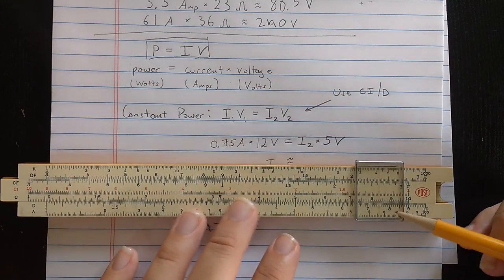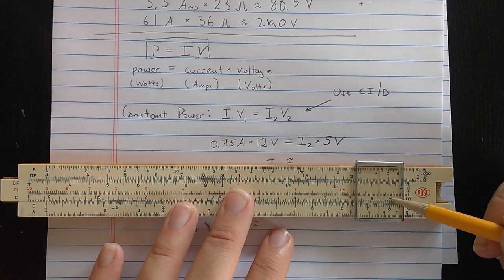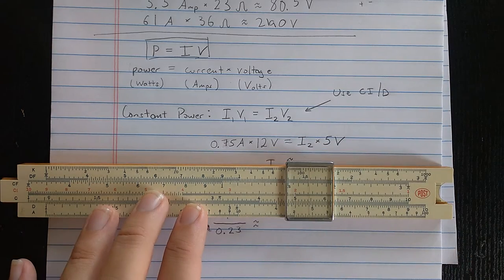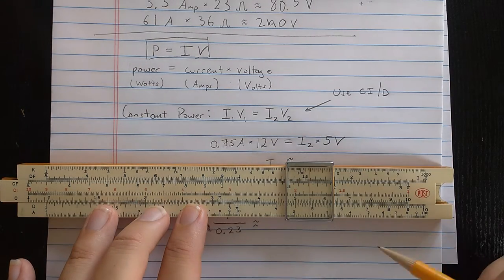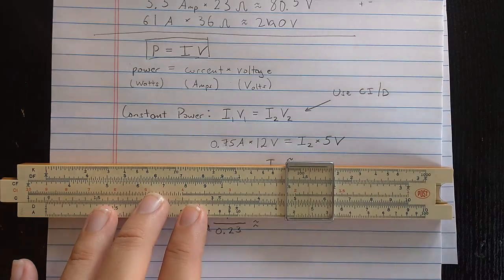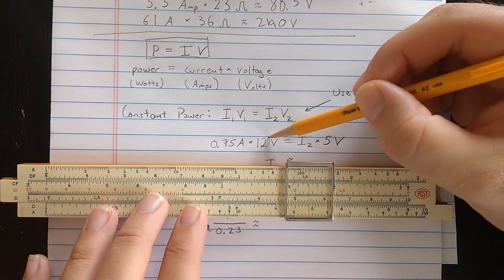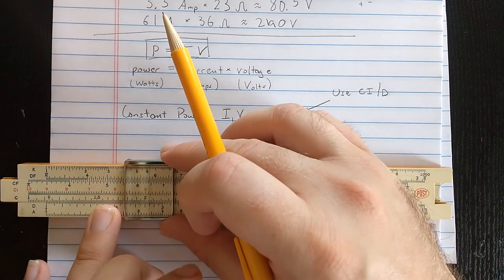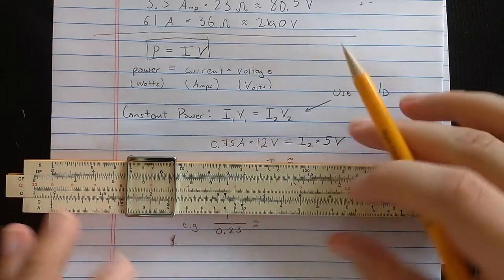So, it turns out that those two numbers, the one on the D scale and the one on the CI scale, if you put the cursor somewhere else, you'll get the same product instead of the same ratio if you use C and D. So, I have 0.75 times 12 is something times 5.